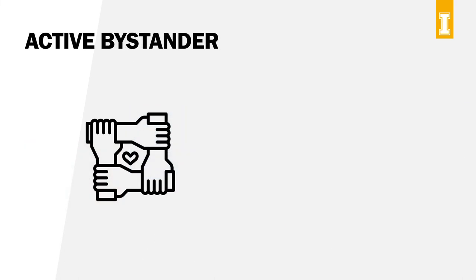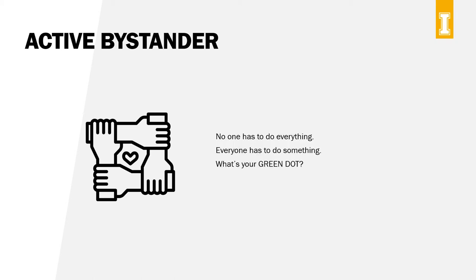Most of us have been in situations that give us that gut feeling that something isn't right — that what you're noticing could lead to harm or is currently harming someone. And all of us have walked on by or brushed off those situations. But we all have a part to play in keeping ourselves, our peers, and our campus safe, including situations when the not-so-good effects of alcohol come into play. Being an active bystander is noticing that something doesn't look right and stepping in to help, keeping your own personal safety in mind. You don't have to be a superhero to do something that can have a big impact, including preventing injury or saving a life.